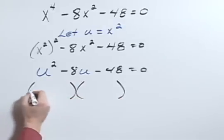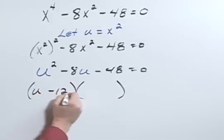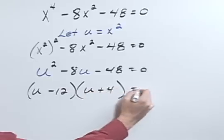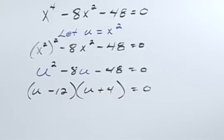Factoring that gives us u minus 12 and u plus 4, of course, equals zero.